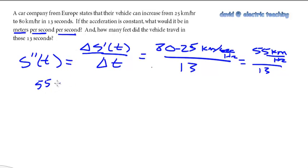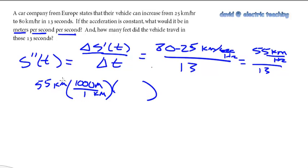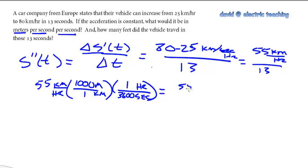So if I look at 55 kilometers and want to convert this — here comes a quick physics lesson — you work with units and they cancel just like algebra. I need to cancel the kilometers and convert with meters: there are 1000 meters per one kilometer. Then I need to get rid of the hours by placing that unit on top so it cancels, and convert to seconds: 3600 seconds — that's 60 times 60.